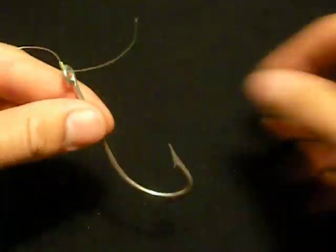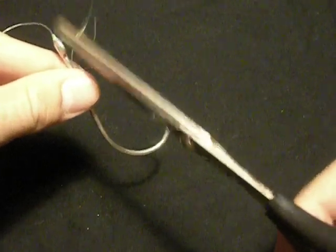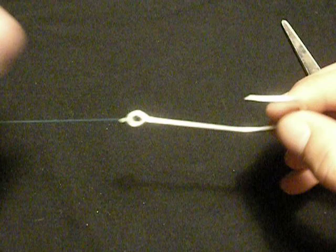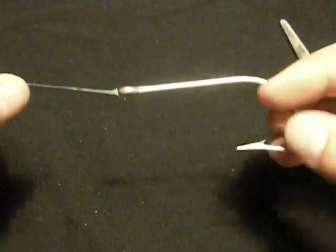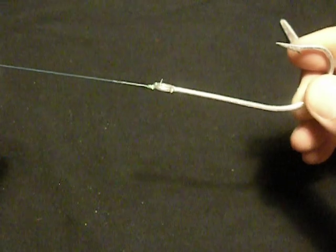Here you would take your tag end and trim to your desired length. And now your improved cinch knot is tied and ready for fishing. Thank you so much for watching. Don't forget to comment, rate, and subscribe.